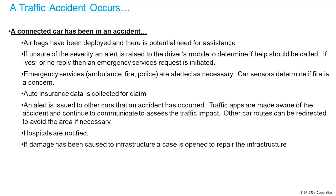An alert can be issued so other cars understand that an accident has occurred at a particular place. Traffic apps can be made aware of the accident, assess the impact on traffic, and determine whether they need to reroute. Hospitals may be notified that certain injuries might be coming in. If there's damage to infrastructure, a case can be opened. You see here, this is not just one industry involved — these APIs are talking to many different industries: government, health care, insurance, auto apps, social media. A whole ecosystem supports the help given to a person in an accident.